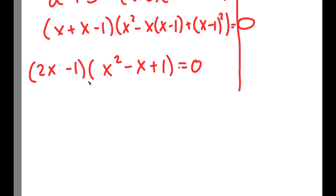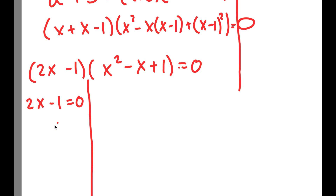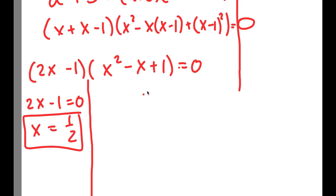So I get two equations from this: I get 2x minus 1 equals 0, meaning x is equal to 1/2, and I get x squared minus x plus 1 is equal to 0.